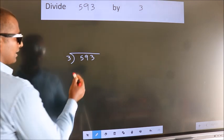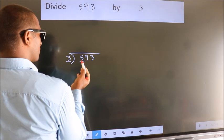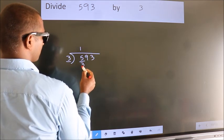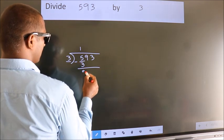Next, here we have 5, here 3. A number close to 5 in the 3 table is 3 times 1 equals 3. Now, we should subtract. We get 2.